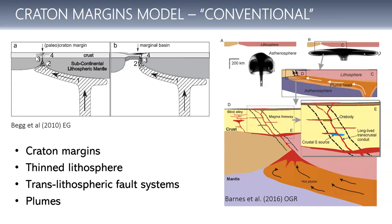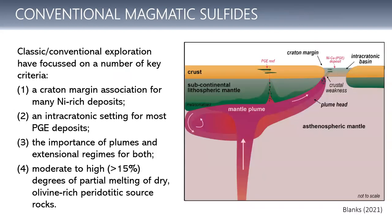So you've got kraton margins, thin lithosphere, fault systems, and plumes. And that is fine for some deposits — there are some classic deposits that we think form in that way. But what it means is if you take this into an exploration approach, you are looking for kraton margins for nickel deposits. The PGE deposits seem to be intracratonic but along these major trans-crustal fault zones. There is an emphasis on the need for plumes to have enough heat to melt a largely peridotitic source. So we're looking for plume times and around kraton margins.